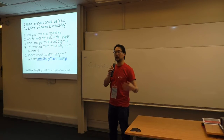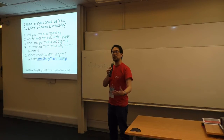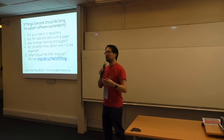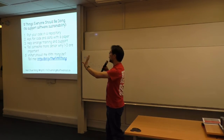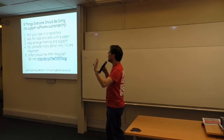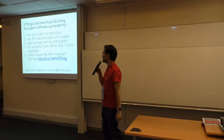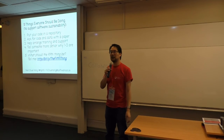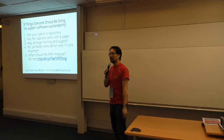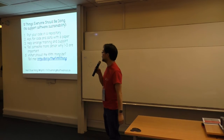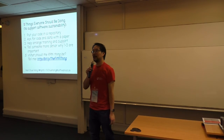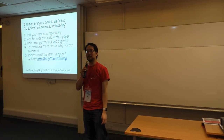I'd like to give some guidance that I can use, that you can use when you talk to people in your areas, around what are the things you should do. So as well as putting your code in a repository, asking for code and data in a paper, helping to arrange training and support, and talking to someone more senior about why these things are important — it should be one to five soon.